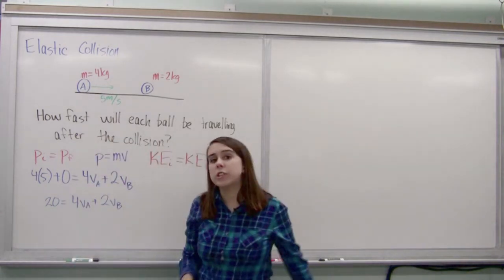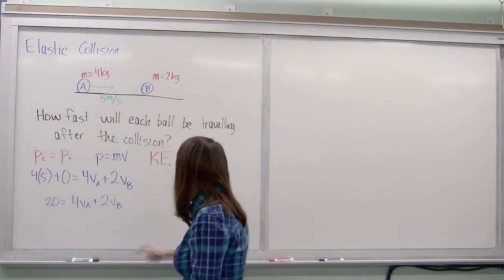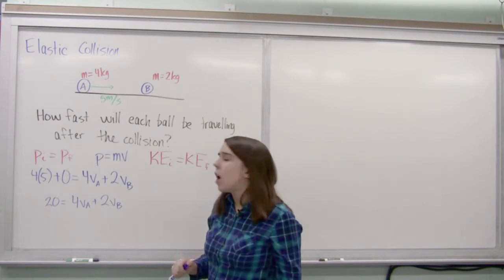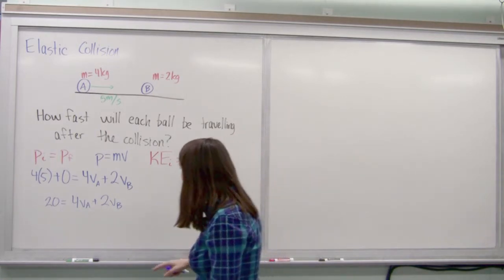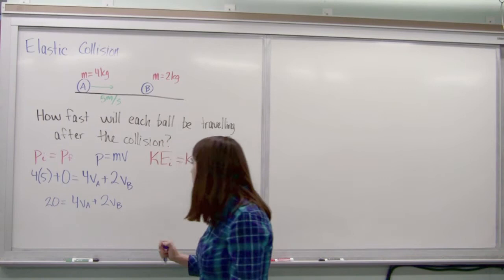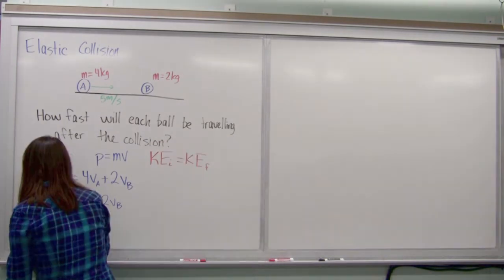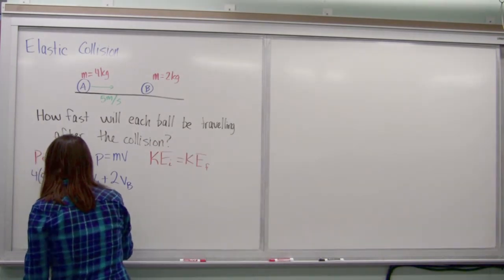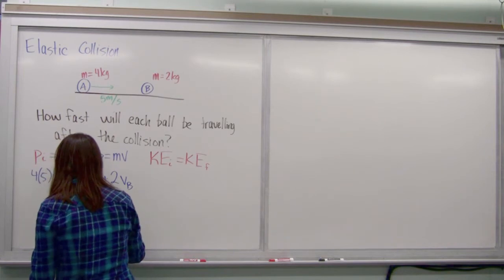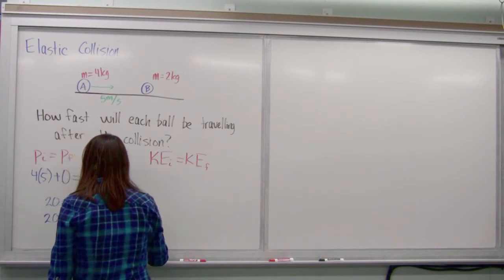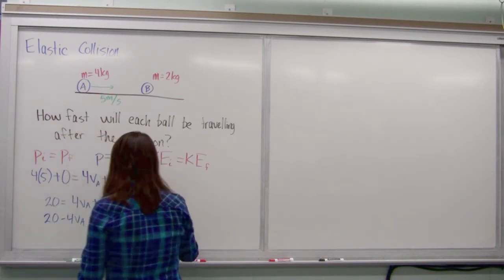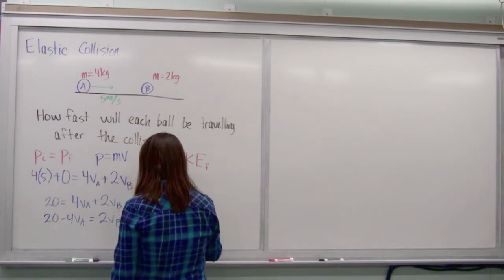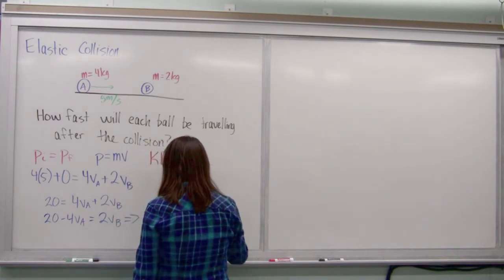I have one equation and I have two unknowns. So I am going to have to work with the kinetic energy over here. But first, I'll go ahead and solve for one of these. Let's solve for VB. 20 minus 4 VA is equal to 2 VB or VB is equal to 10 minus 2 VA.